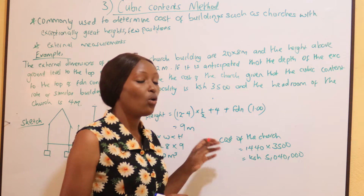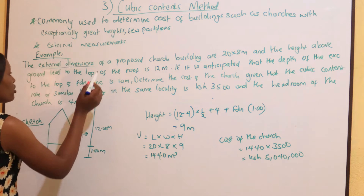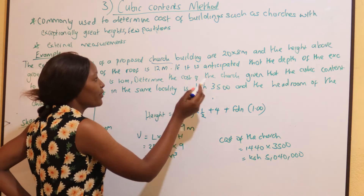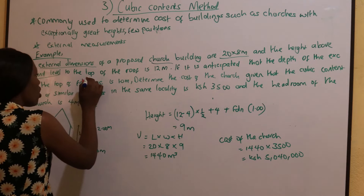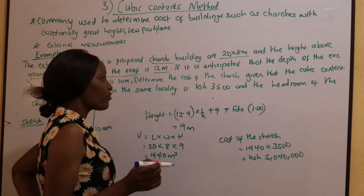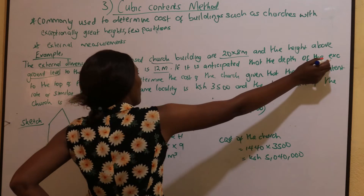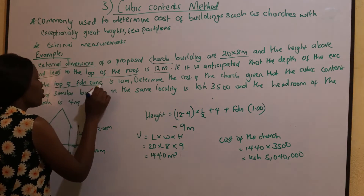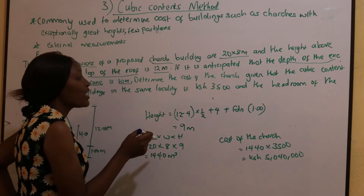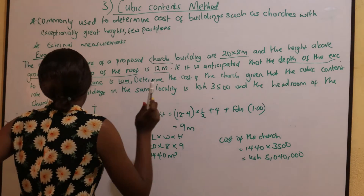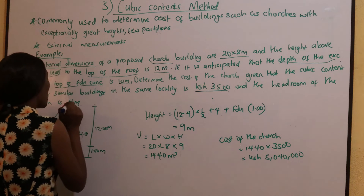Here is an example of how you calculate using the cubic content method. The external dimensions of a proposed church building are 20 by 8 meters. The height above ground level to the top of the roof is 12 meters. It is anticipated that the depth of excavation to the top of the foundation concrete is 1 meter. Determine the cost of the church, given that the cubic content rate of similar buildings in the same locality is 3,500 shillings, and the headroom of the church is 4 meters.